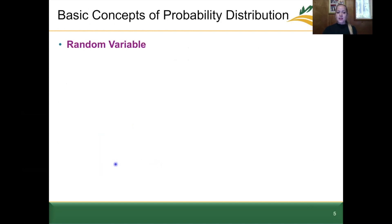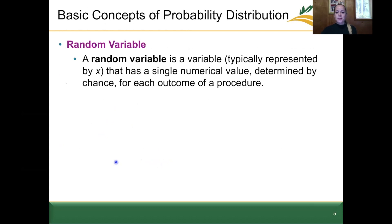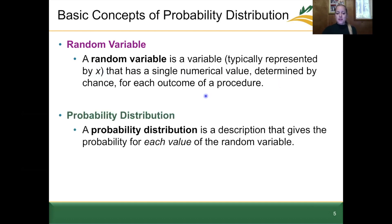Let's go through some definitions. First is a random variable. A random variable is a variable typically represented by x that has a single numerical value determined by chance for each outcome of a procedure. The next definition is a probability distribution. A probability distribution is a description that gives the probability for each value of the random variable. The emphasis is on probability — it gives the probability, not the frequency. We'll look at examples of both of these.